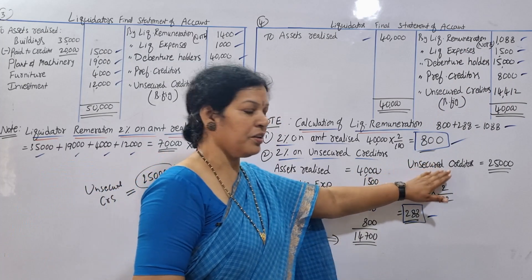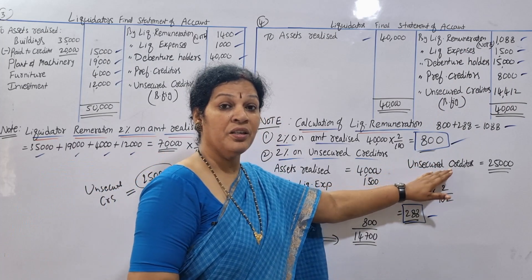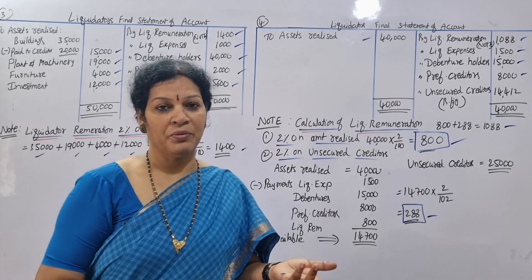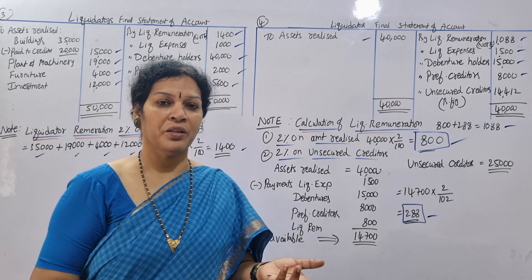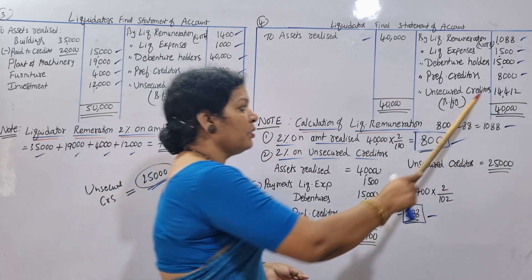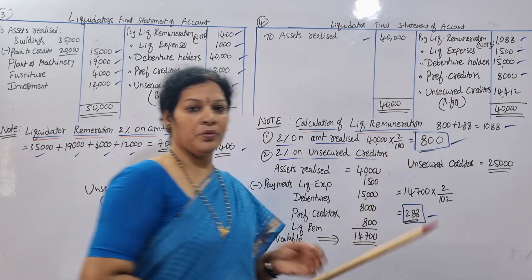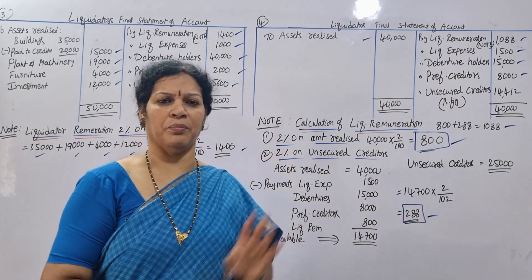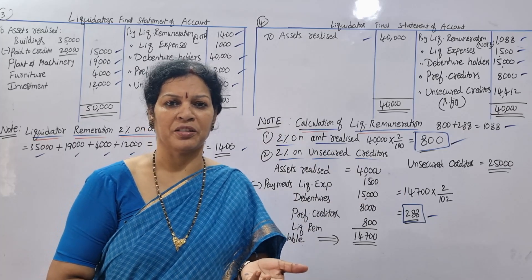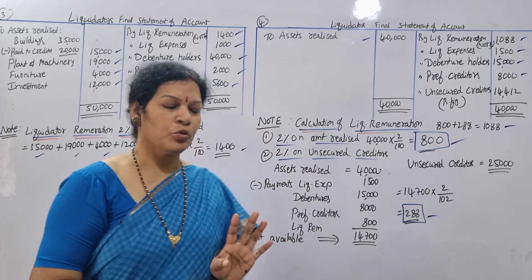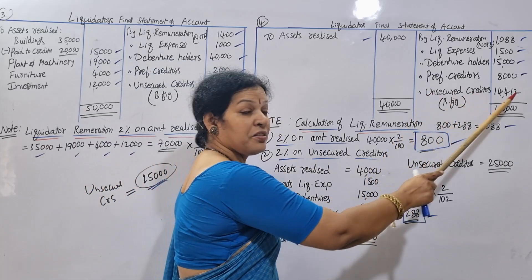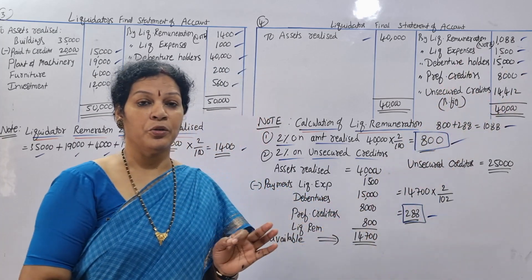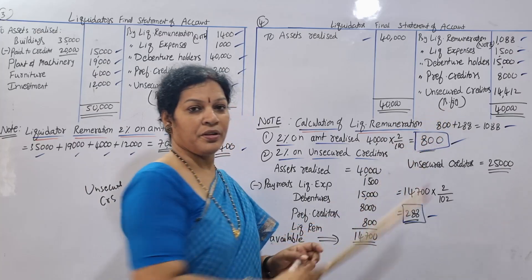The amount available is $14,412, but the unsecured creditors are owed $25,000. Since the full amount is not available, we pay $14,412 as the balancing figure to unsecured creditors.